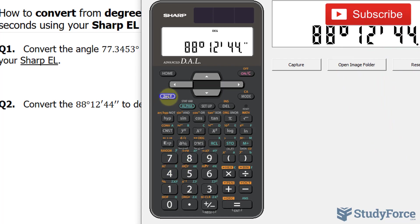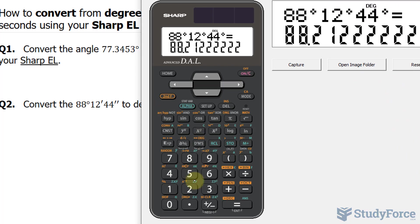Now click second function, and then again, this button, DMS. We end up with 88.2122 repeating.